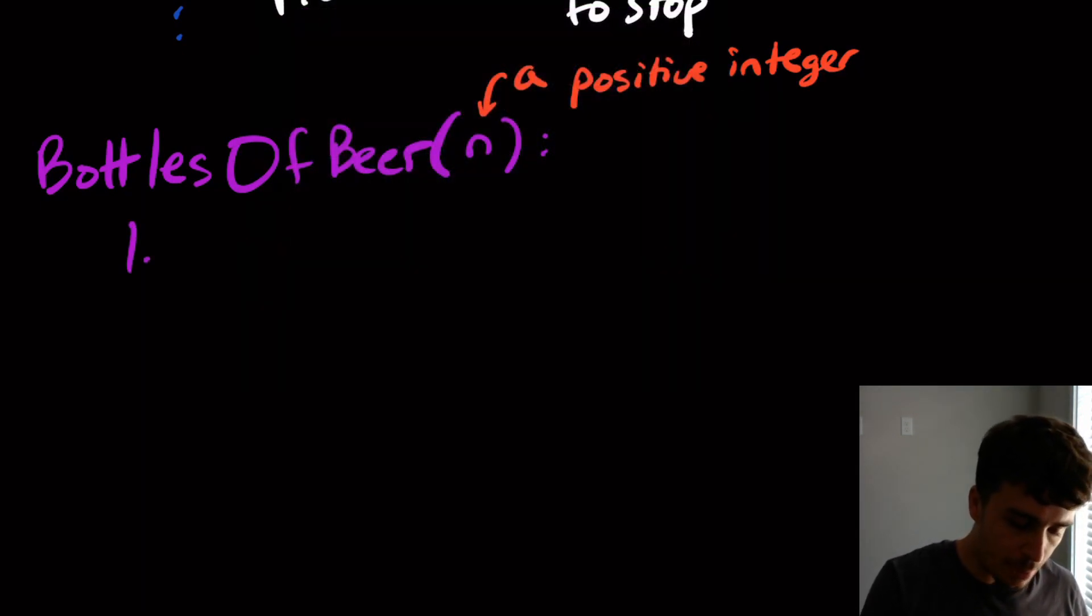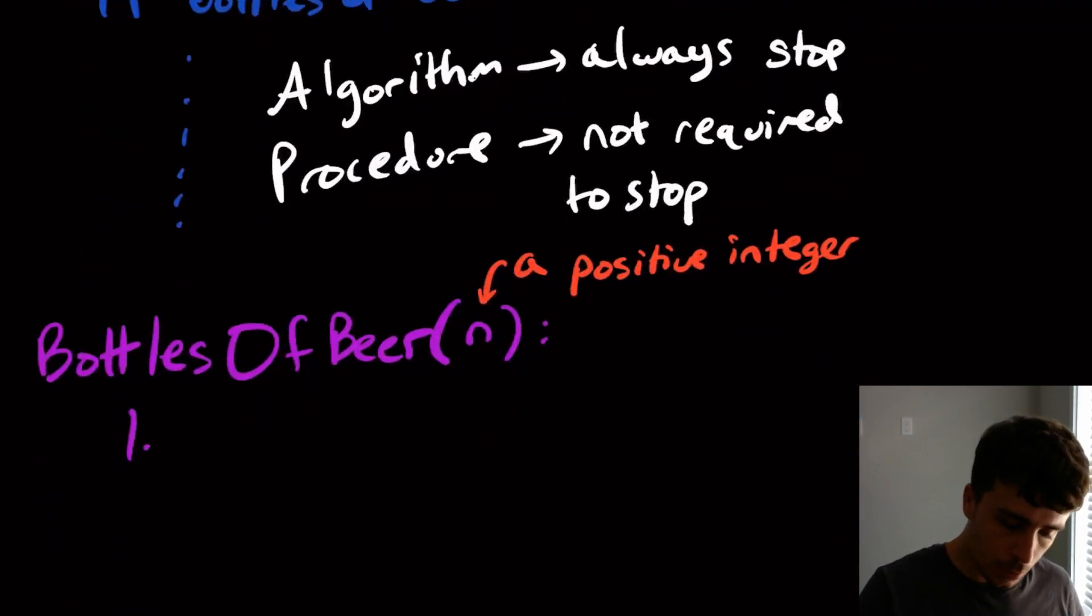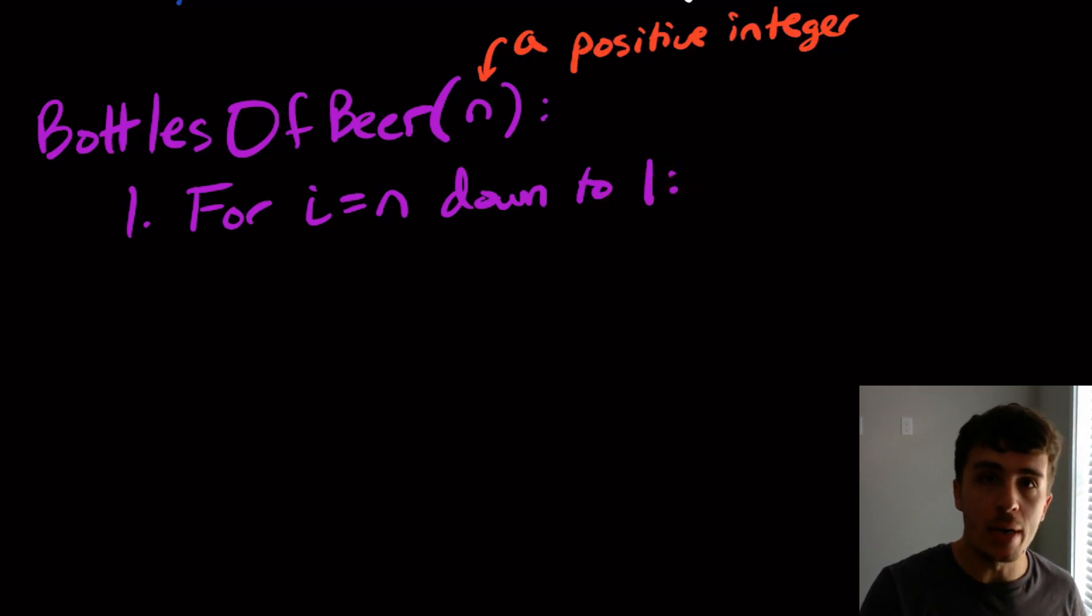So what is the first step going to be? We want to be able to run these three lines from whatever number that was passed in all the way down to zero. But notice here that it says take one down. So if this was zero bottles of beer on the wall, we can't actually take one down. So what I'm going to do here is I'm going to do a for loop from I equal n initially starting at this value down to one. So we're starting at this value down to one.